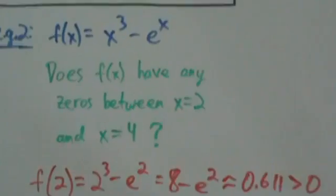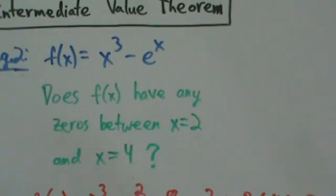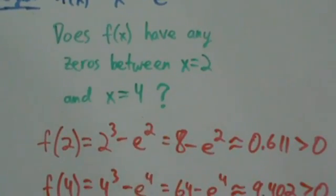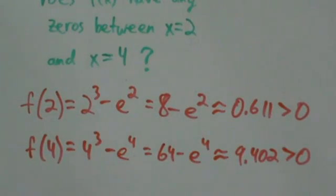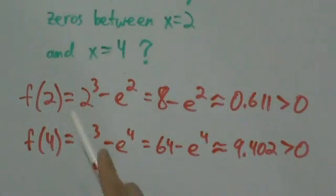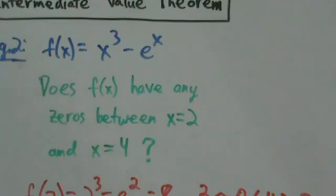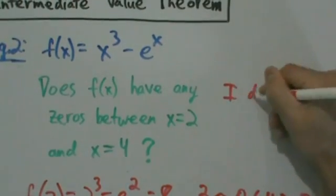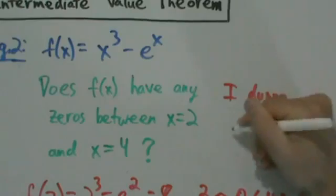Because remember the Intermediate Value Theorem says if the function is continuous and if the values have opposite signs, then there's at least one zero. But here f(2) is positive and f(4) is positive, so we can't conclude anything. Remember our discussion from a couple videos ago, we can't say anything. So does f(x) have any zeros between x equals 2 and x equals 4?